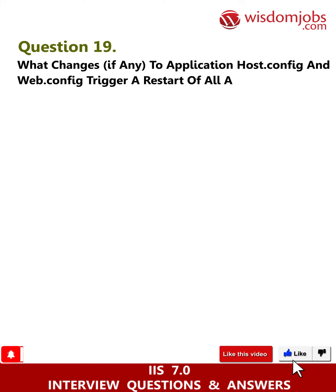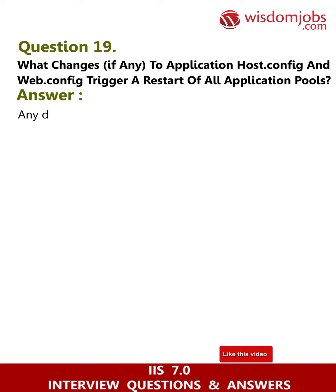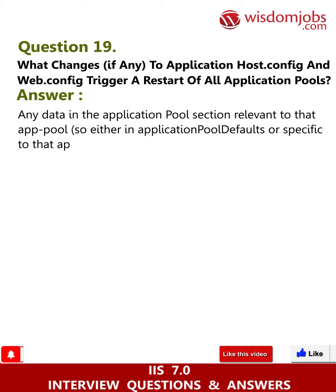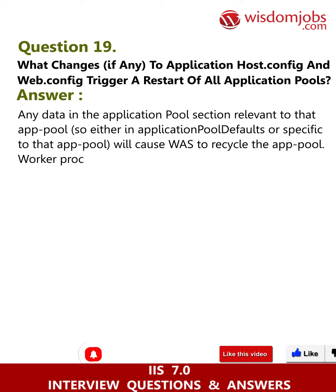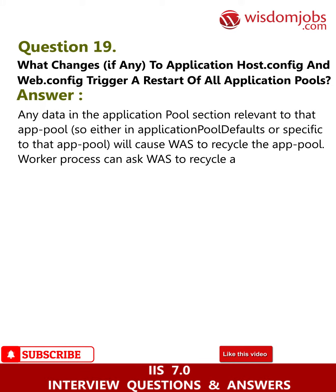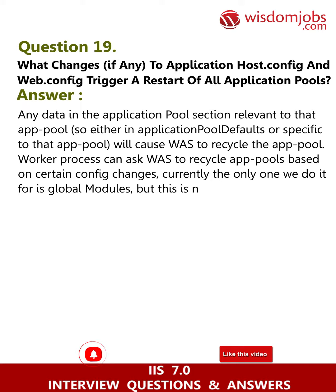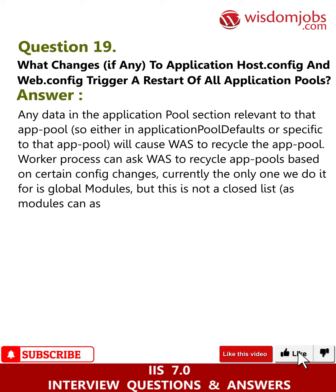Question 19: What changes, if any, in applicationHost.config and web.config trigger a restart of all application pools? Answer: Any data in the application pool section relevant to that app pool — either in application pool defaults or specific to that app pool — will cause WAS to recycle the app pool worker process. WAS can recycle app pools based on certain config changes; currently the only one triggered is global modules, but this is not a closed list as modules can ask for recycle based on config change.